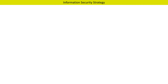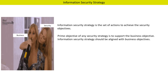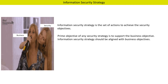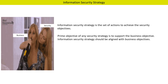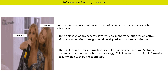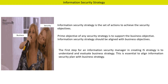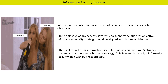Now let us discuss about information security strategy. Information security strategy is the set of actions to achieve the security objective — what should be done, how should be done, and when should be done to achieve the security objectives. As the picture indicates, the prime objective of any security strategy is to support the business objective. Information security strategy should be aligned with business objective. The first step for an information security manager in creating the information security strategy is to understand and evaluate the business strategy. This is essential to align the information security plan with business strategy.